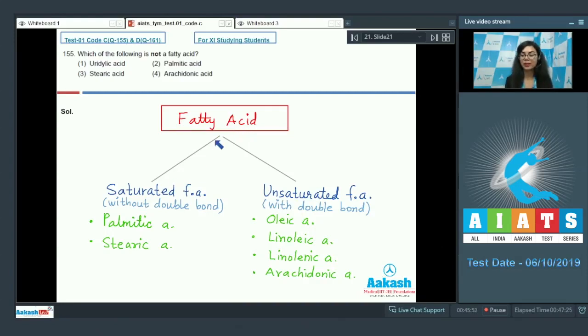Fatty acids are categorized into two types: saturated fatty acids and unsaturated fatty acids. Saturated fatty acids do not have any double bonds, whereas unsaturated have double bonds. Examples include palmitic acid, stearic acid, oleic acid, linoleic acid, linolenic acid, and arachidonic acid. So palmitic, arachidonic, and stearic acids are all fatty acids.